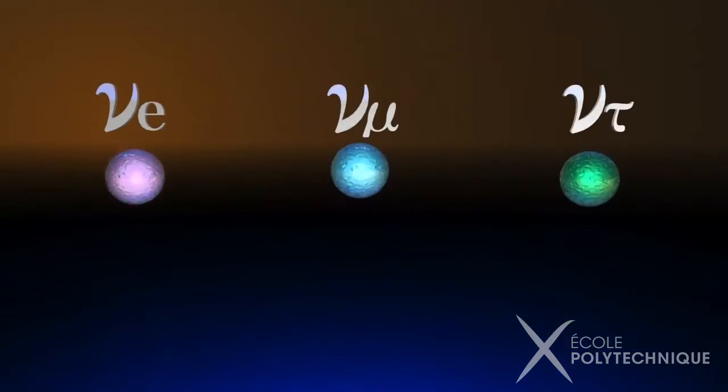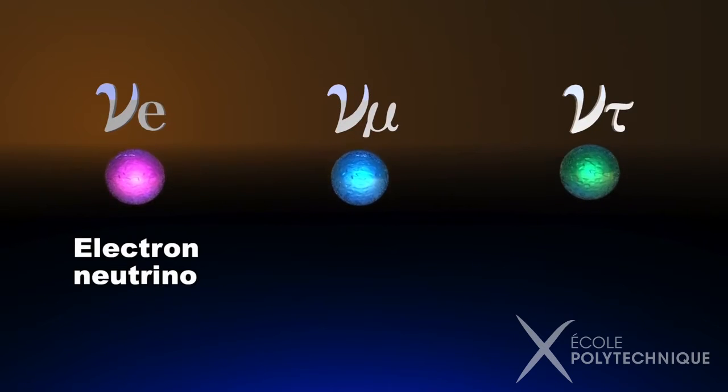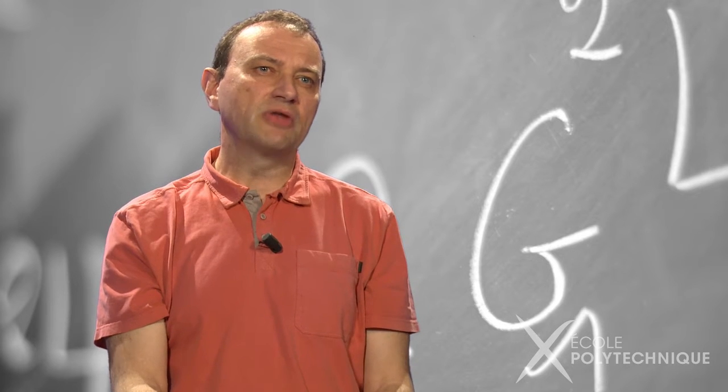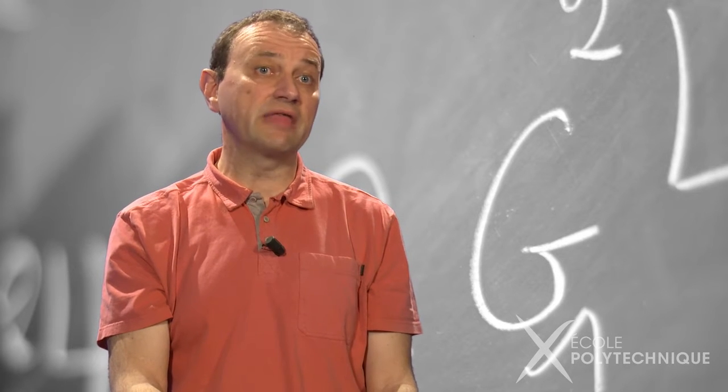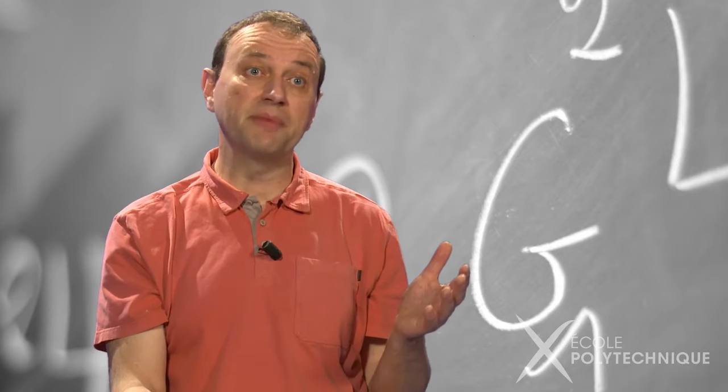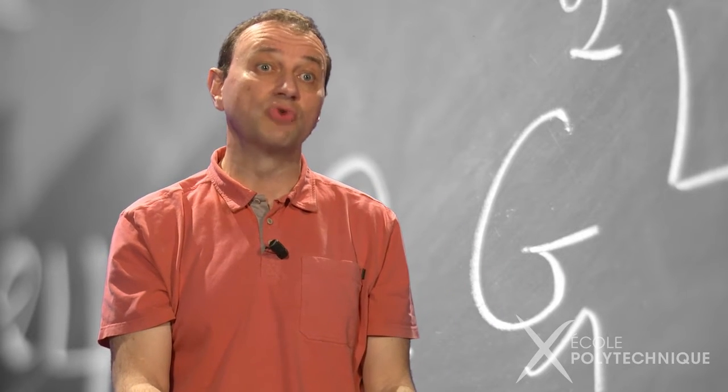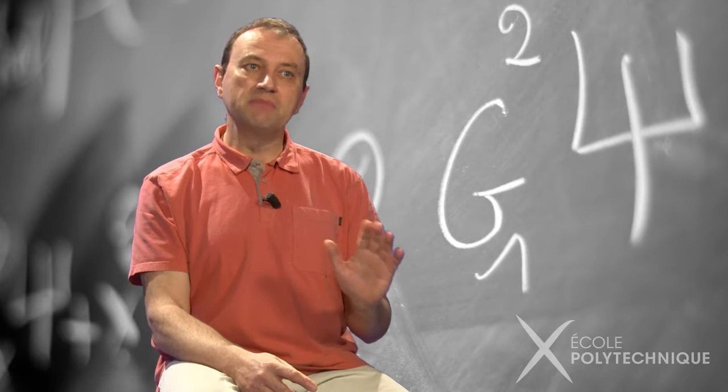We know three types of neutrinos, called electron, muon and tau, with different characteristics. Since about 15 years, we also know that they can oscillate from one type to another, which proves in particular that their mass does not equal to zero. But many mysteries remain.